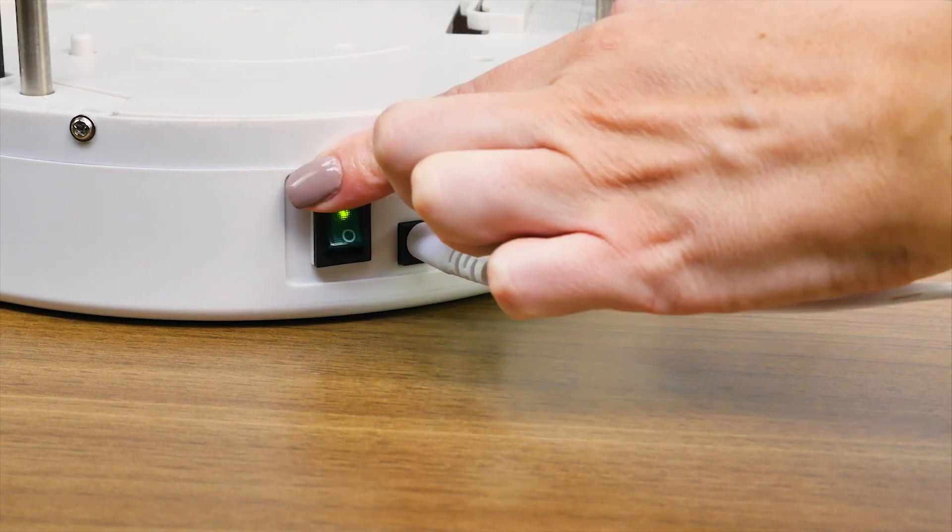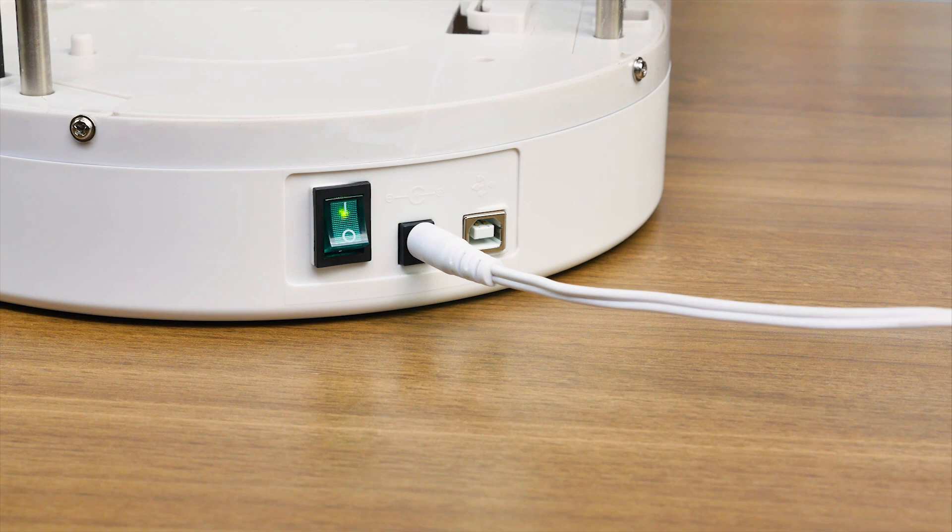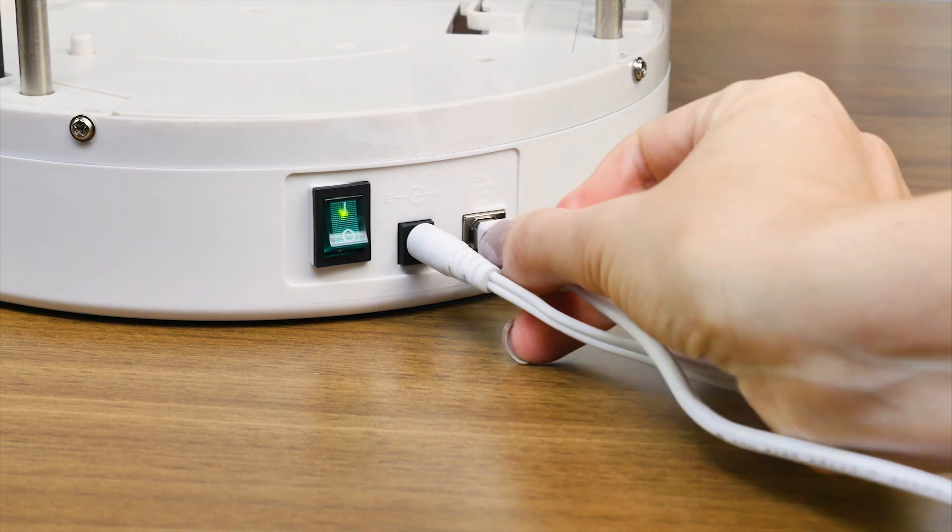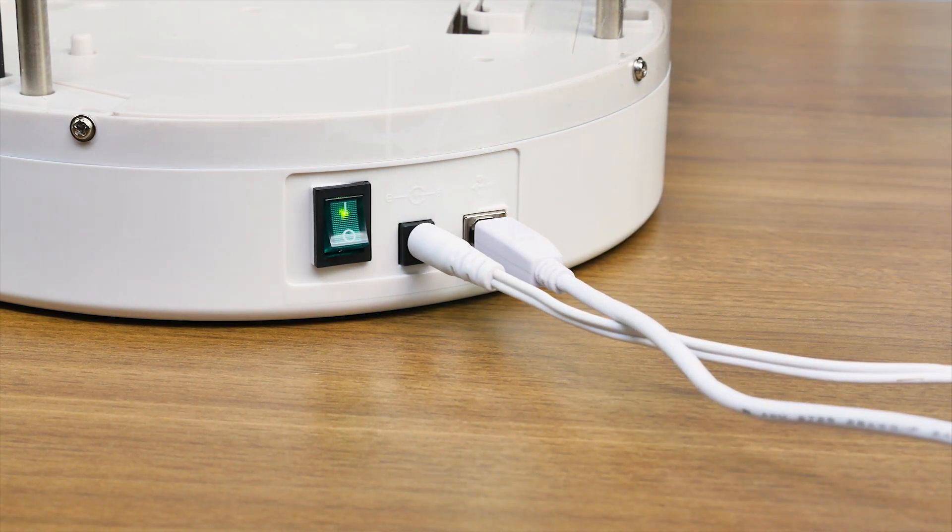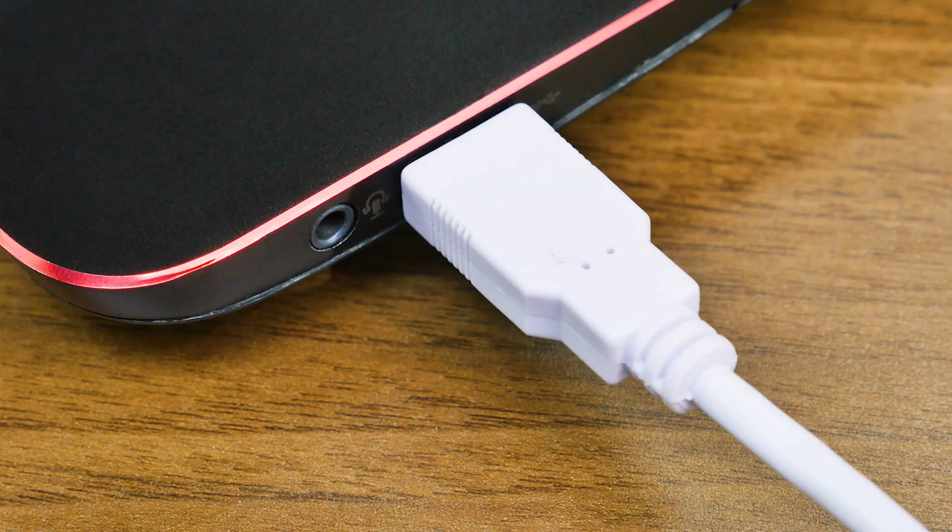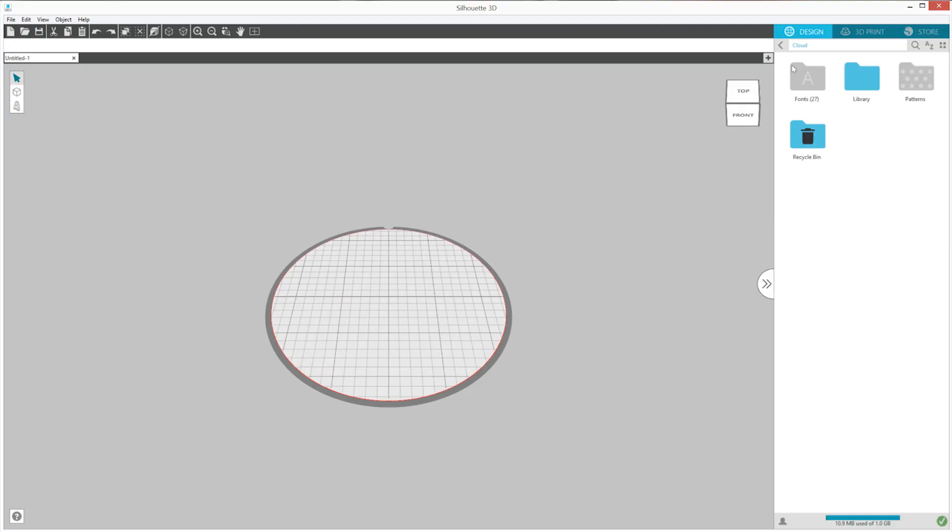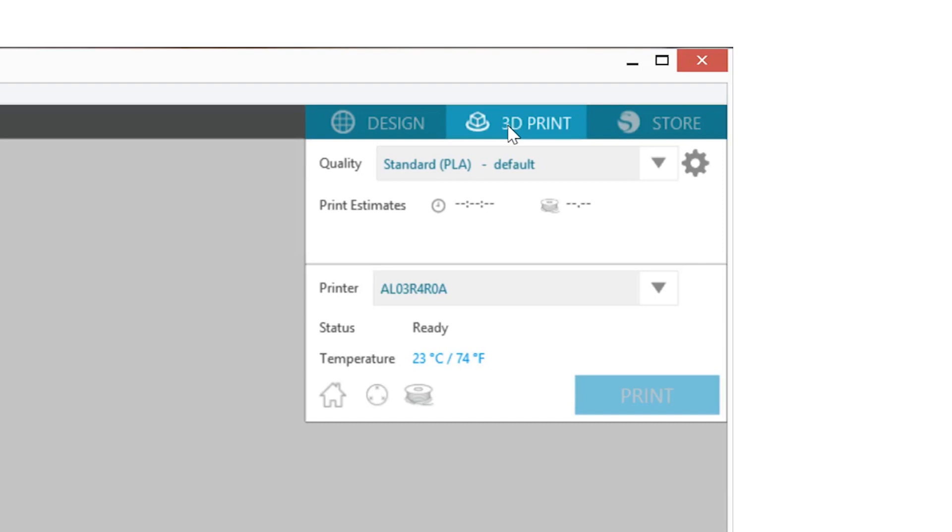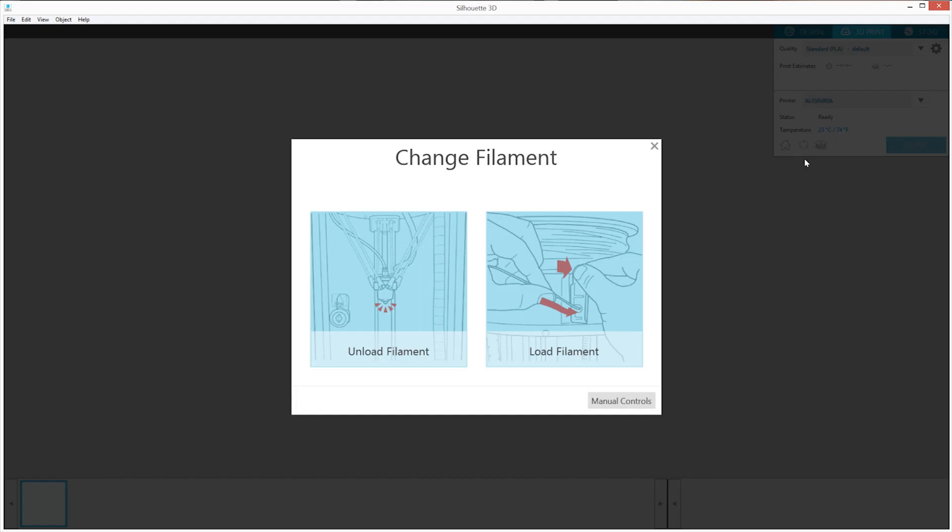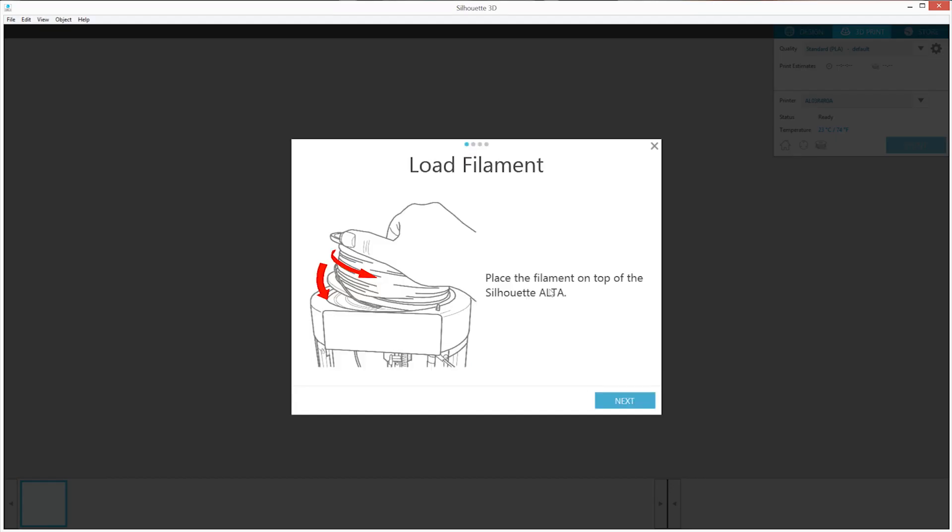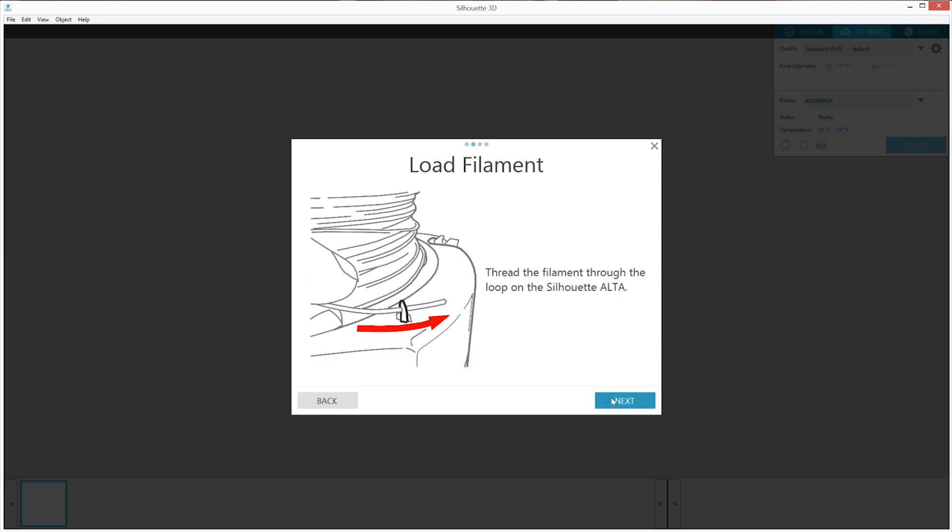Power on your Alta and connect it to your computer. In the software, click on the 3D print tab. In the upper right hand corner, ensure that your machine has been selected. With the Alta selected, click on the Filament button. Next, click on Load Filament and go through the following steps to load your filament properly.